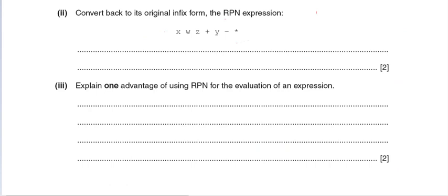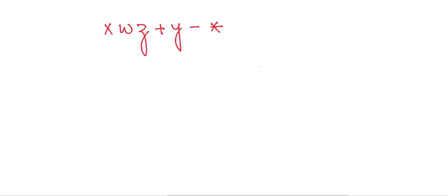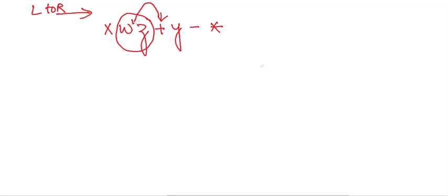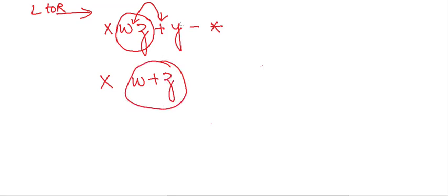Now we convert an RPN expression back into infix. Going left to right, we look for the first operator. When we reach it, we take the previous two variables and place the operator between them. So for X W Z plus C minus Y star, the first operator plus gives us X W plus C.